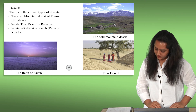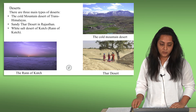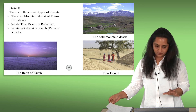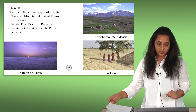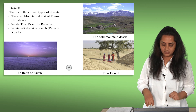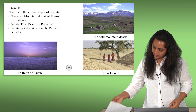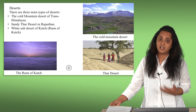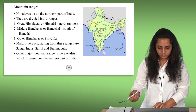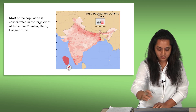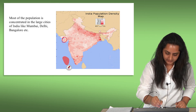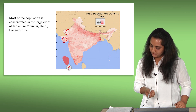Next are the deserts. There are mainly three types of deserts: the cold mountain desert of Trans-Himalayas, the white salt desert of Kutch known as the Rann of Kutch, and the Thar desert in Rajasthan, also called the Sandy desert. The Rann of Kutch is in Gujarat, the state where the speaker is from, and the Thar desert is in Rajasthan.